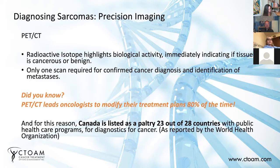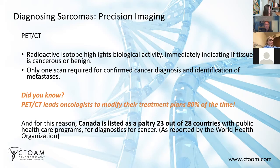So PET-CT — what is PET-CT? PET-CT is two modalities of imaging: a PET scan combined with a CT scan. It's really the only tool that can be used to accurately identify a cancerous lump from a non-cancerous lump in real time.